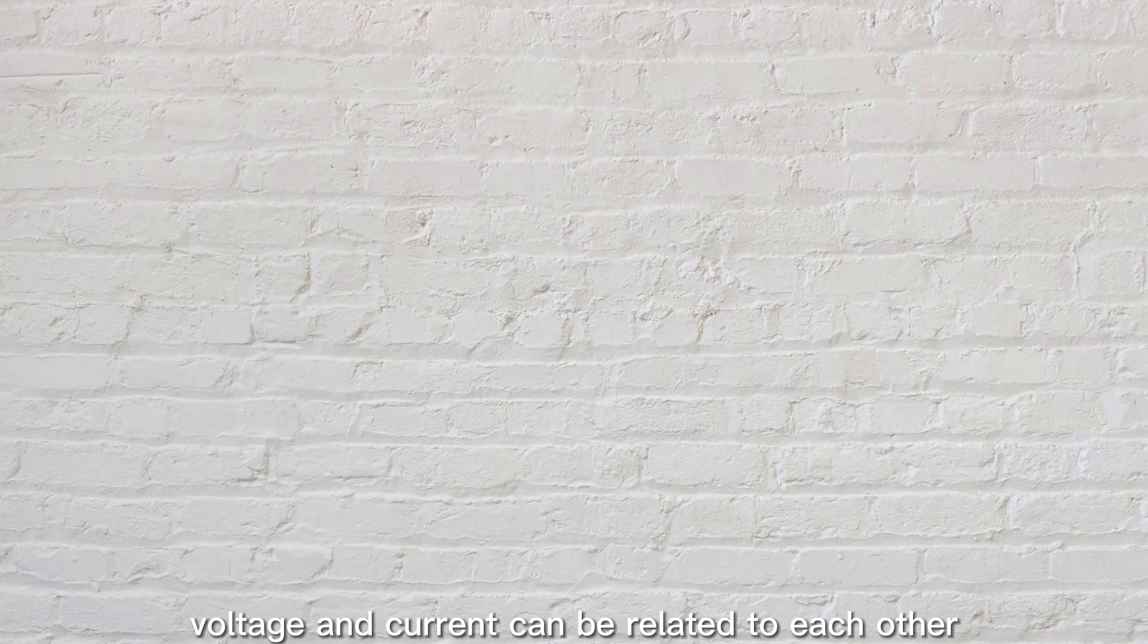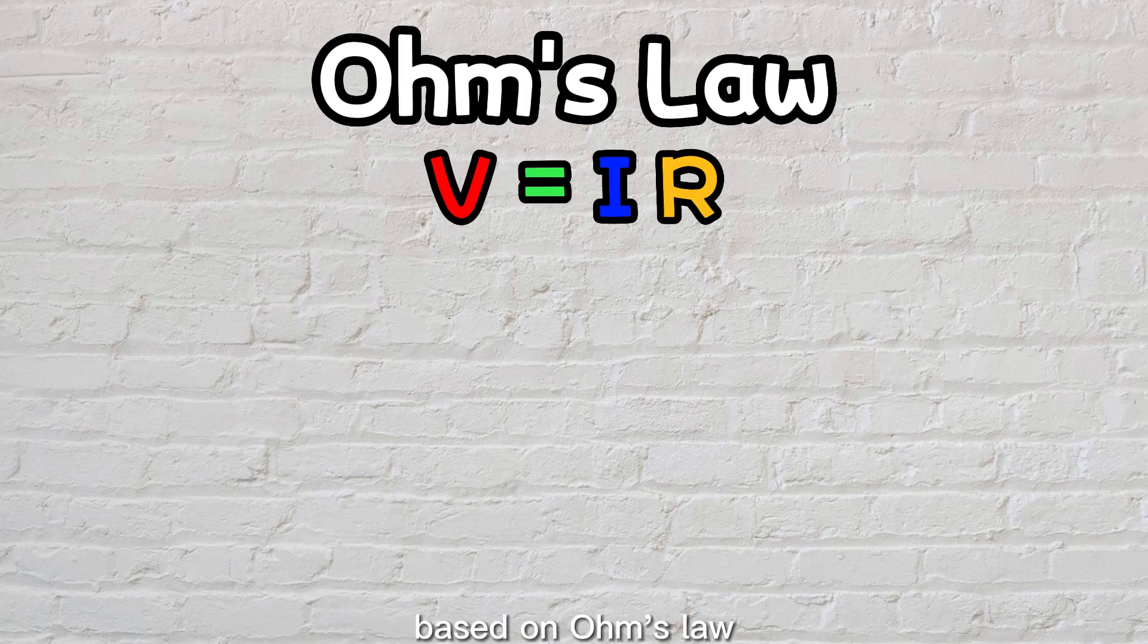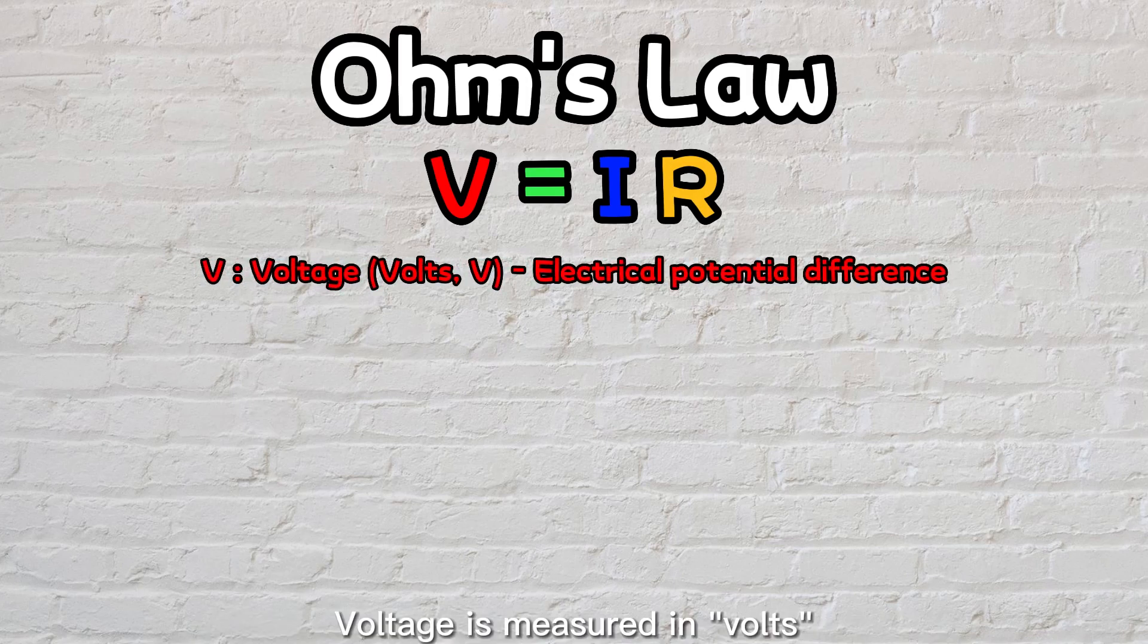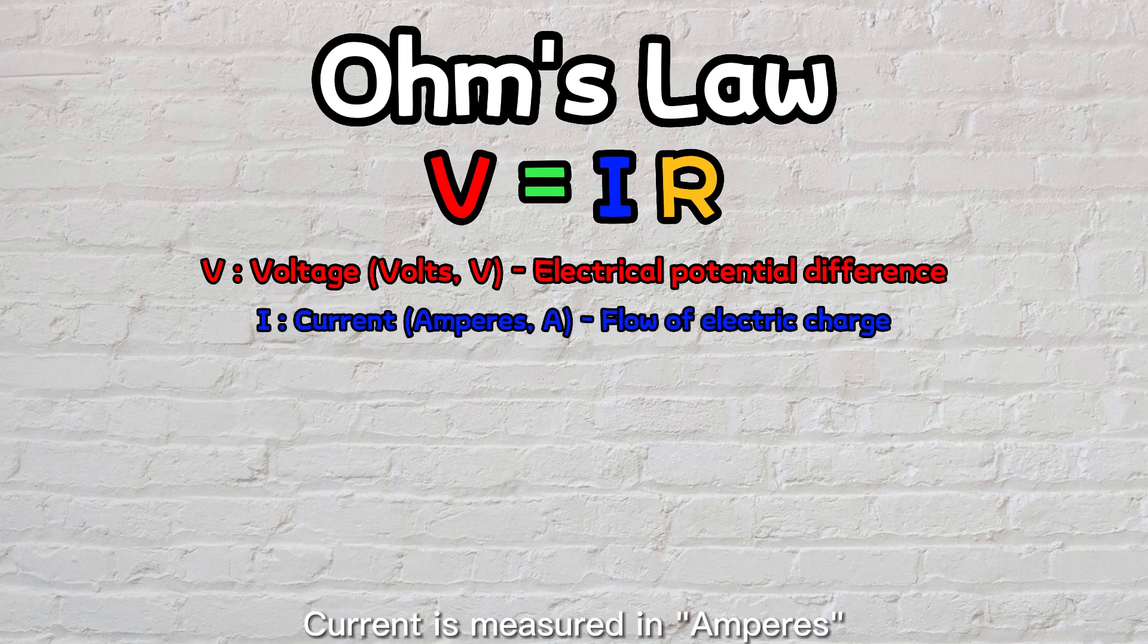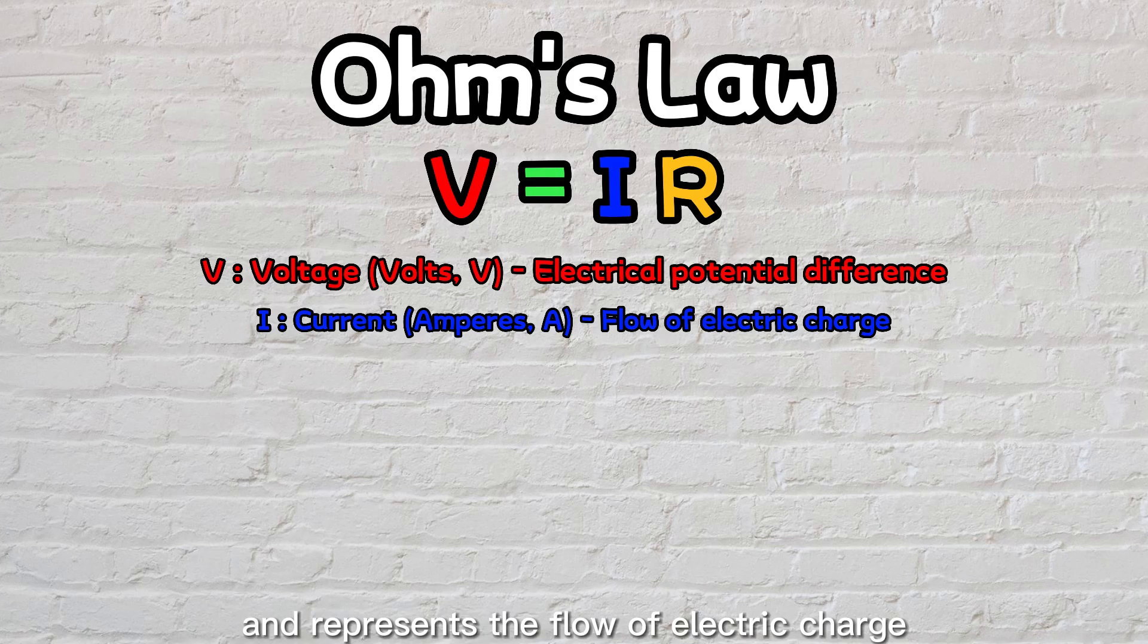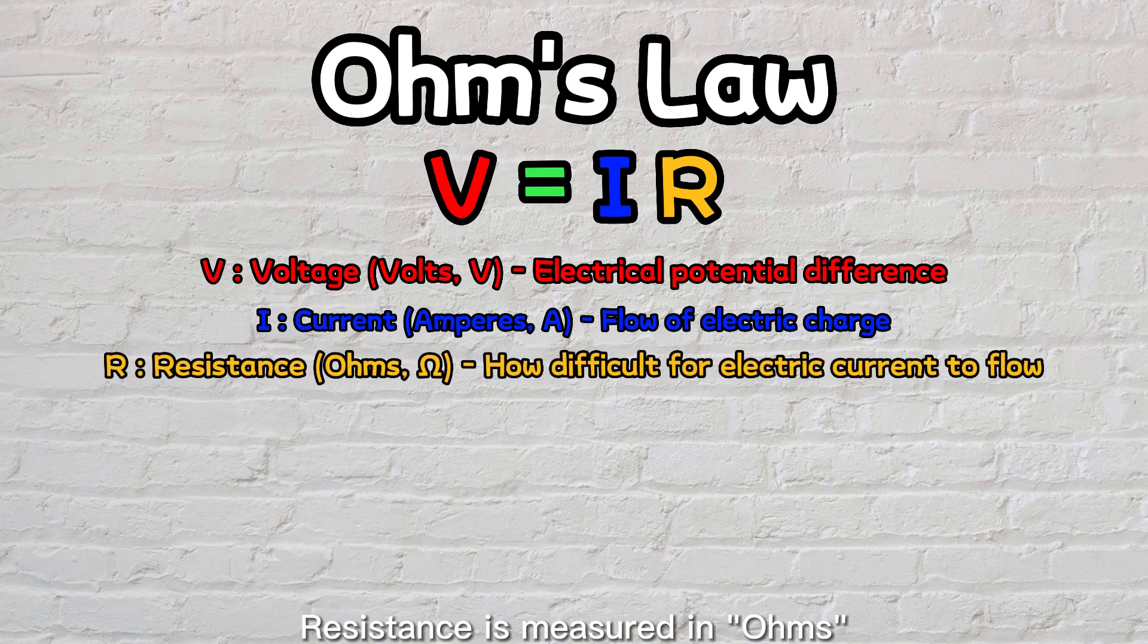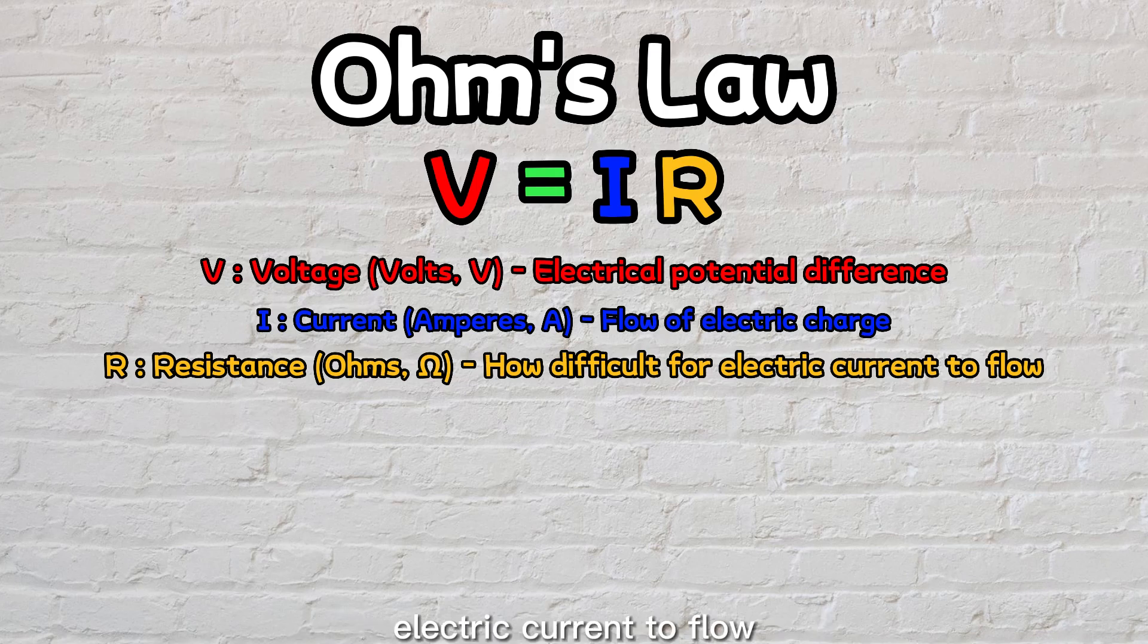Actually, voltage and current can be related to each other based on Ohm's law. Voltage is measured in volts, and represents the electrical potential difference between two points in a circuit. Current is measured in amperes, and represents the flow of electric charge. Resistance is measured in ohms, and represents how difficult it is for electric current to flow.